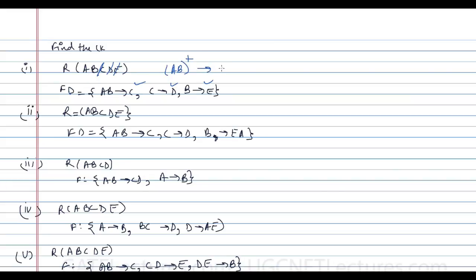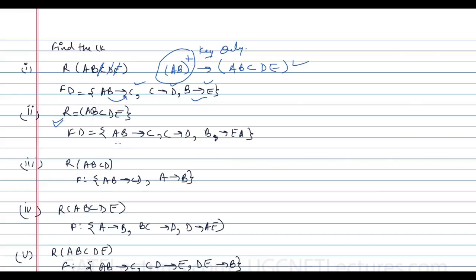If the AB closure can identify everything, then AB is a minimal candidate key. AB determines AB itself (trivial), AB→C, C→D, and B→E — so we can identify everything. Therefore AB is the key for this relation, and this is the only candidate key here. Now let us check the next option.